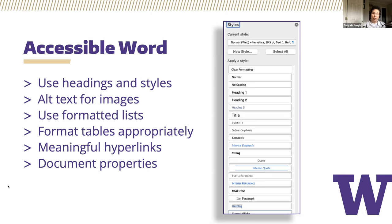Lists are another way of creating structure in documents, and you'll want to make sure to use the correct list-generating tool. Use the bulleted list tool to create bulleted lists and the numbered list tool to create numbered lists. The multi-level list tool helps with creating nested lists of varying degrees with numbers and bullets. It's a little tricky to use but it's much more effective than using the regular bullet list tool and indenting lists manually — the multi-level tool will do all of that for you.